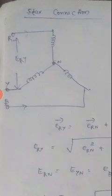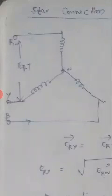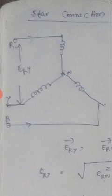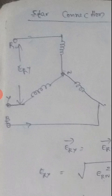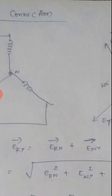This is a star connected three-phase system. Here line voltages are E_RY, E_YB, and E_BR. Phase voltages are E_RN, E_YN, and E_BN. Now let us derive the relationship between line voltage and phase voltage.